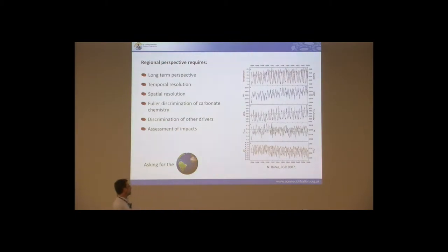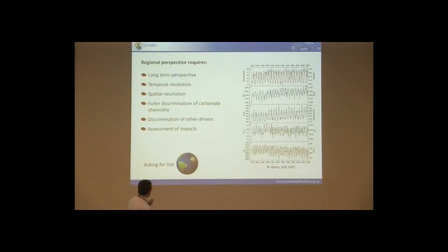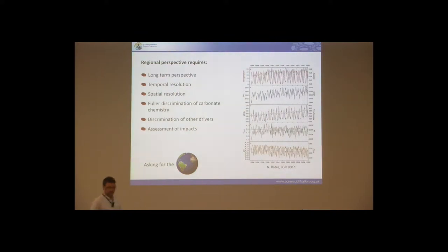I'm going to argue that this regional perspective requires — and a long-term perspective goes without saying — but we need decent temporal resolution, decent spatial resolution, a fuller discrimination of the carbonate chemistry than just two from four, and we need to discriminate the other drivers of the ecosystem that are happening and changing at the same time: temperature, changes to riverine nutrient inputs, and so on.